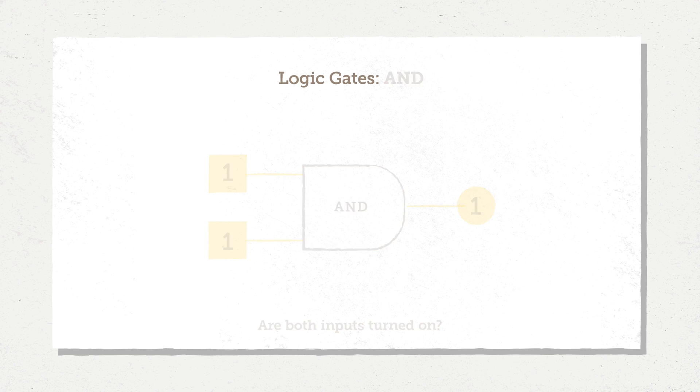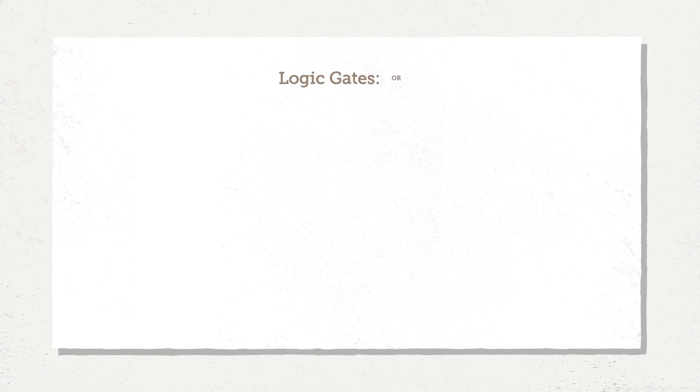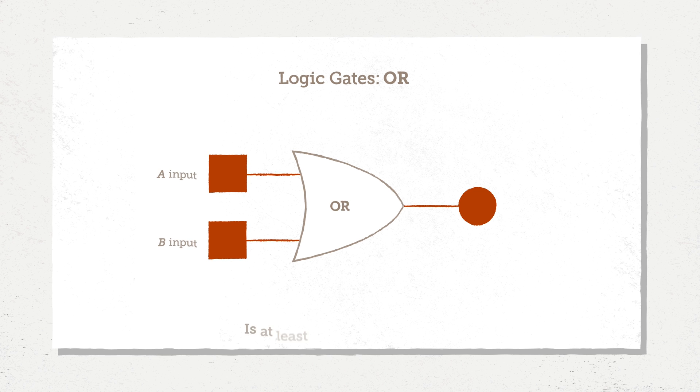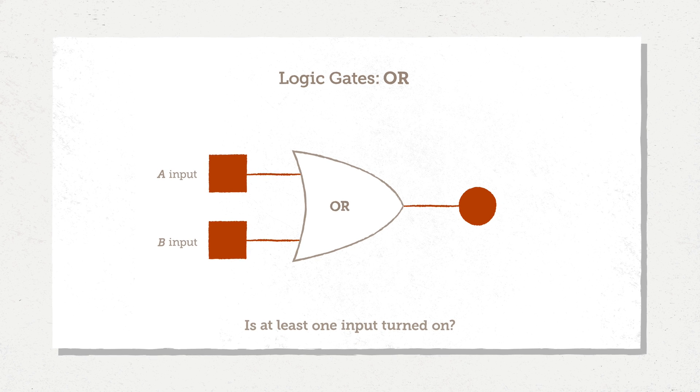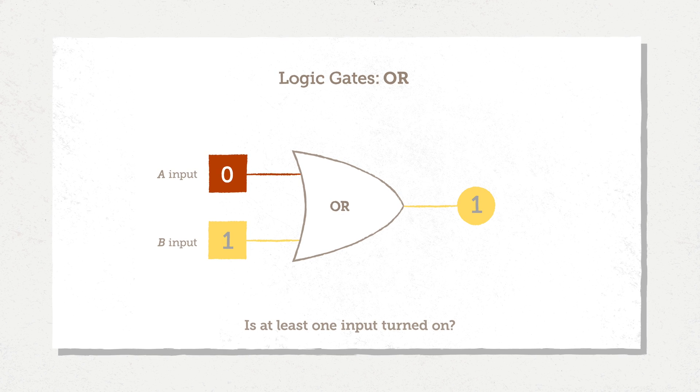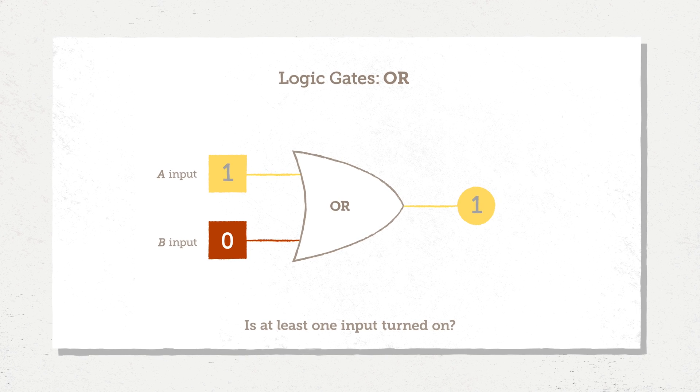AND gates tell us when both inputs are true. This is an OR gate. It tells us when at least one input is true. So here, 0 or 0, we get a 0. But in the case of 0 or 1, output is true. 1 or 0, output is true. And of course, 1 or 1, output is still true.